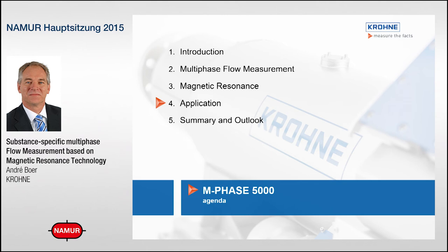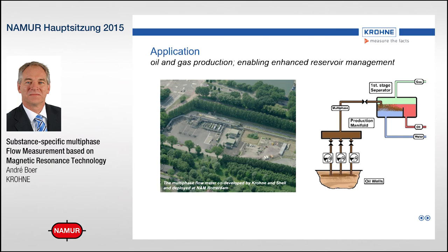Having seen this in theory, let's have a look at the actual application — one on an actual oil well. What you see here is an aerial view of a site in Rotterdam, where a number of oil wells — slightly over 20 — come together in a production manifold, and from the manifold they go into a separator where the individual phases are separated out. In the big separator tank, the top part contains gas, the middle part contains oil, and the lower part contains the water coming from all these oil wells.